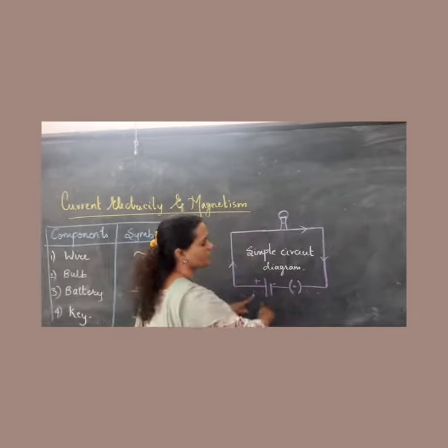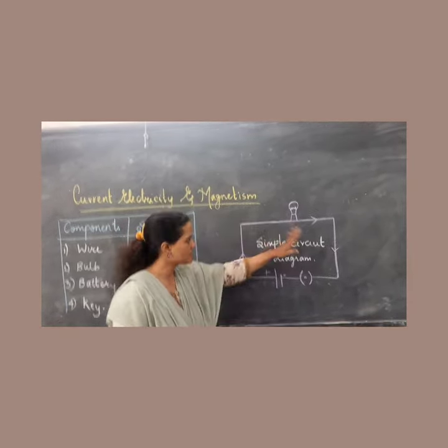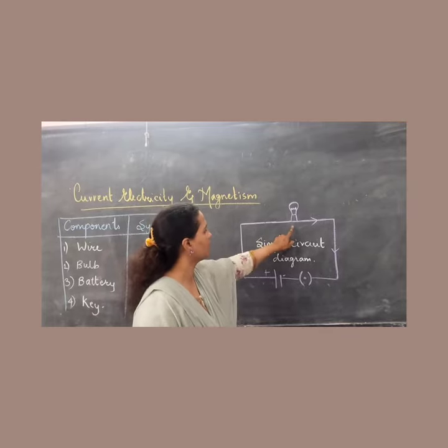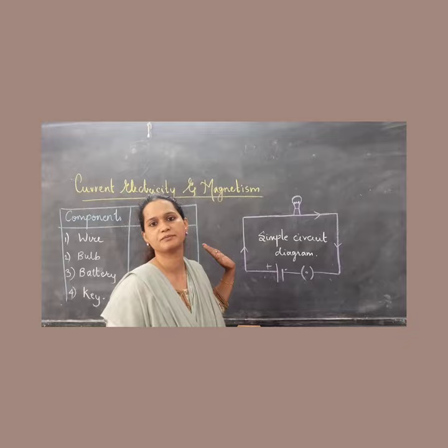Now we are going to construct a simple circuit which students will perform by themselves and do the activity. So this is the circuit diagram where we can see the bulb and battery, key, and the current is going through there.